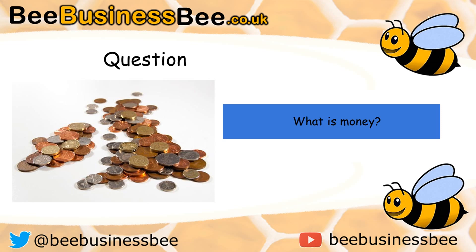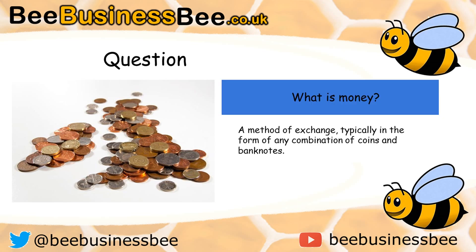Let's get started with a quick question. What is money? Pause the video now and jot down some of your ideas. So money is typically used and defined as a method of exchange, typically in the form of any combination of coins and banknotes. That's what we tend to mean when we talk about the term money, and it tends to be some form of legal tender.